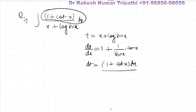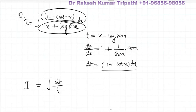So the integral, let the integral be I, will be I equals dt upon t, because the denominator is substituted as t and the numerator 1 plus cot x dx has become dt.